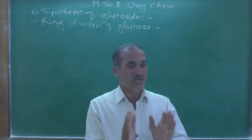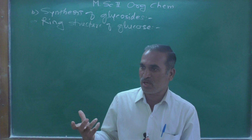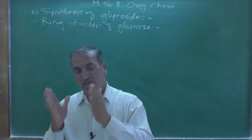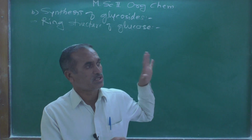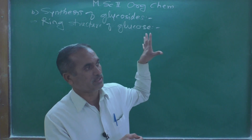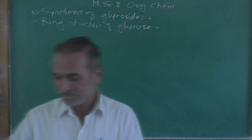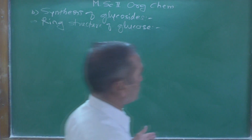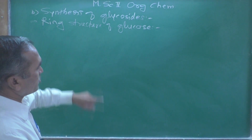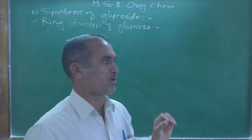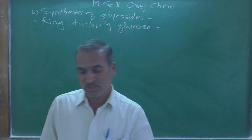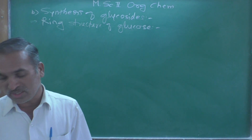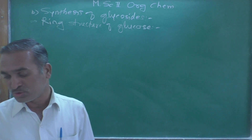Before studying glycosidic linkage, we will look at monosaccharides, because in the classification of carbohydrates the first type is a monosaccharide — the simplest carbohydrate unit, which we have considered as D-glucose. Why is it referred to as D-glucose? Now let us look at the ring structure of glucose.